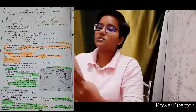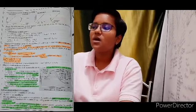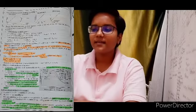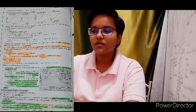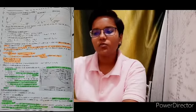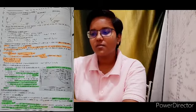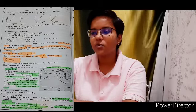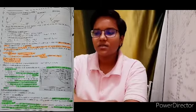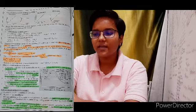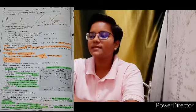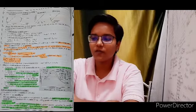Pseudo first order reactions are those reactions which are not truly of the first order but under certain conditions become reactions of the first order. For example, acid hydrolysis of ethyl acetate: CH₃COOC₂H₅ + H₂O (H⁺) → CH₃COOH + C₂H₅OH; rate = K'[CH₃COOC₂H₅][H₂O] ≈ K[CH₃COOC₂H₅], where K = K'[H₂O]. Another example is acid-catalyzed inversion of cane sugar: C₁₂H₂₂O₁₁ + H₂O → C₆H₁₂O₆ (glucose) + C₆H₁₂O₆ (fructose); rate = K[C₁₂H₂₂O₁₁].